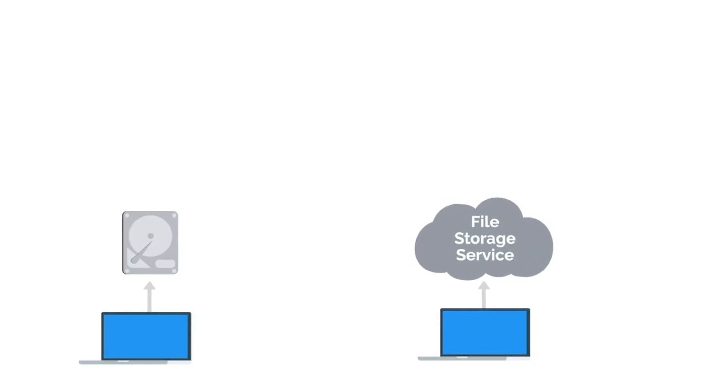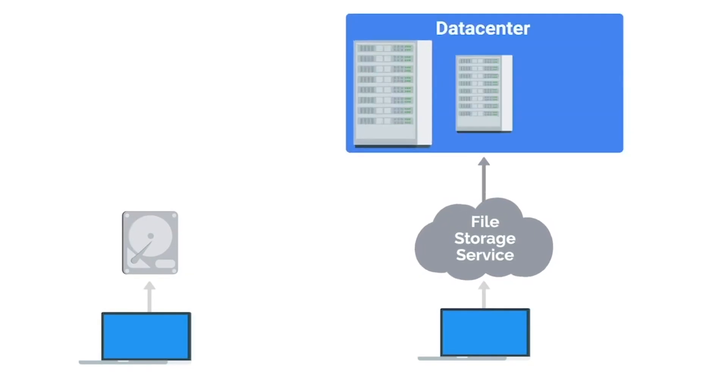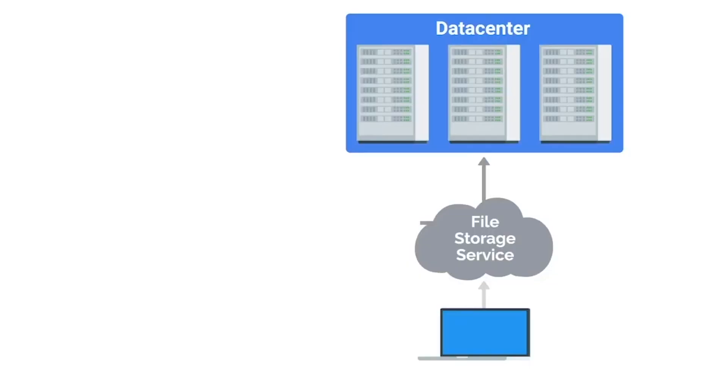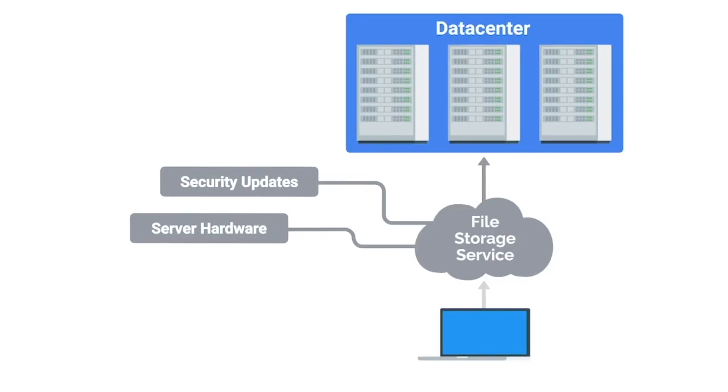It's easy to see why the cloud has become a popular way of computing in the last few years. Now, instead of holding onto terabytes of storage space on your laptop, you can upload that data to a file storage service like Dropbox, which stores that data in a managed location like a data center. The same goes for your organization — instead of managing your own servers, you can use internet services that handle everything for you, including security updates, server hardware, and routine software updates.